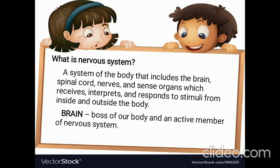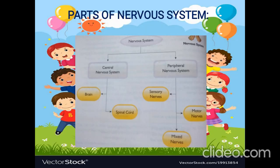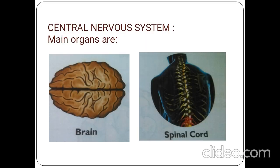Among these, the brain plays an important role. Then we saw about the parts of the nervous system. They are the central nervous system and peripheral nervous system. Central nervous system comprises of brain and spinal cord, whereas peripheral nervous system comprises of sensory nerves, motor nerves, and mixed nerves.